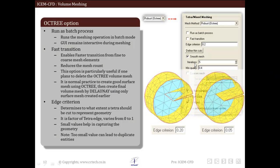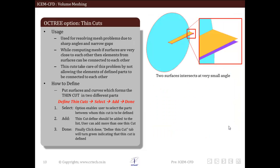You can see the example here. In the first, the edge criteria is 0.2 and the second it is 0.05. You can also see the difference. Let us further see options in octree.